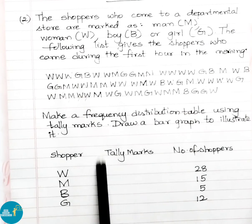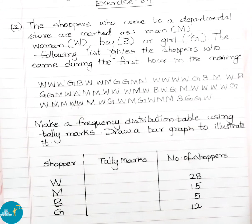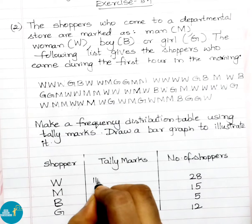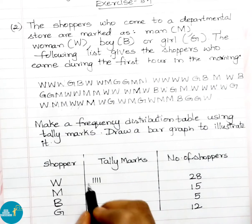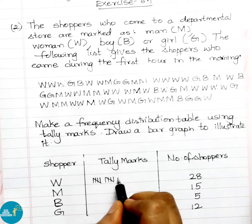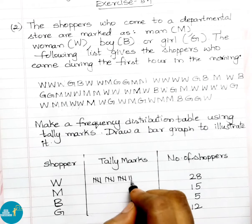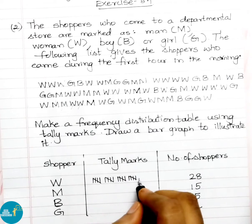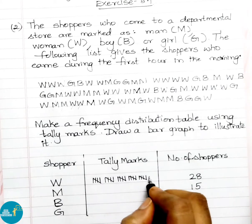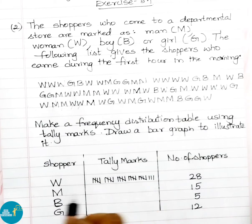Now we shall write these counts in tally marks. Woman W is given as 28 — we represent this with tally marks, grouping in sets of 5 with a cross line, giving us 28 tally marks. Men are given as 15 — three groups of 5, totalling 15. Boys are given only 5, represented as one group of 5 tally marks.